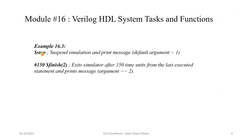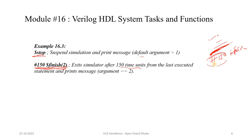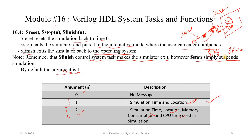For example, calling $stop with no argument uses the default argument of 1, which suspends simulation and prints the simulation time and location. If we call $finish with argument 2 after 150 time units from the last executed statement — for example after statements 1, 2, 3, then a $display — the simulator exits and prints simulation time, location, memory consumption, and CPU time used.